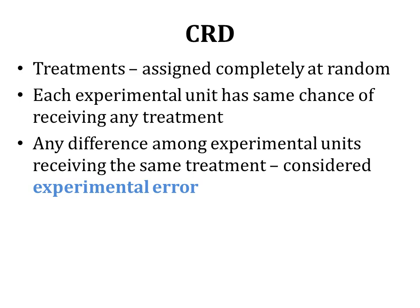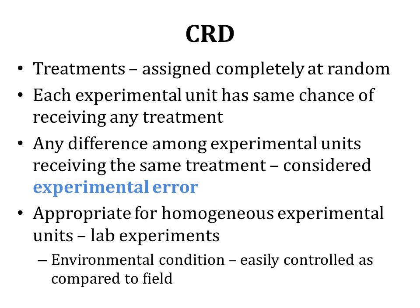This uncontrolled variation is known as experimental error. CRD is appropriate for homogeneous experimental units, such as lab experiments in which environmental conditions are easily controlled. In CRD, treatments are assigned completely at random, which supposes that experimental units are kept under similar environmental conditions. There is very little effect of extraneous factors, so the major source of difference is due to different treatments. CRDs are simple and basic experimental designs, appropriate under homogeneous environmental conditions typically found in lab experiments.